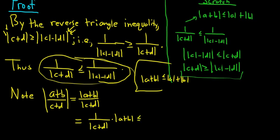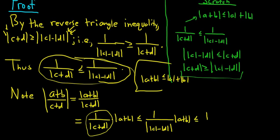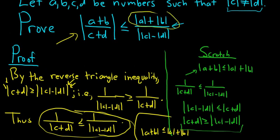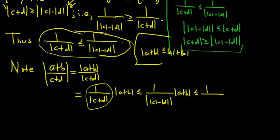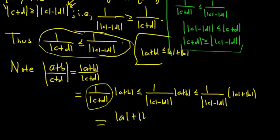This is less than or equal to — replacing the denominator piece first — 1 over ||C| − |D|| times |A+B|, which is less than or equal to (|A| + |B|) over ||C| − |D||. Rewriting, this equals |A+B| over ||C| − |D||. We started with the expression and showed it's less than or equal to that — and that's the proof.